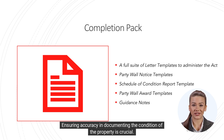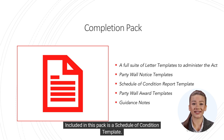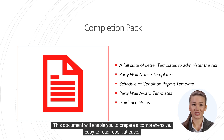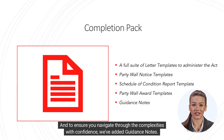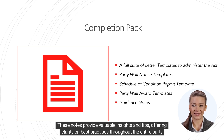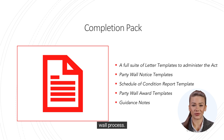Ensuring accuracy and documenting the condition of the property is crucial. Included in this pack is a schedule of condition template. This document will enable you to prepare a comprehensive, easy-to-read report at ease. And to ensure you navigate through the complexities with confidence, we've added guidance notes. These notes provide valuable insights and tips, offering clarity on best practices throughout the entire Party Wall process.